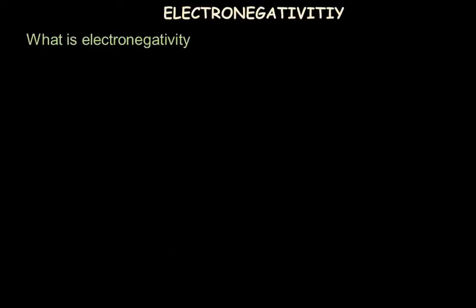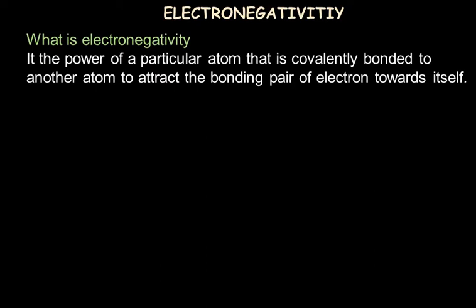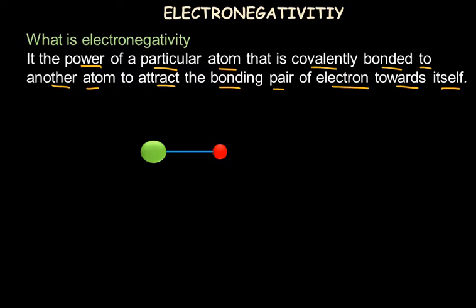Let's first start with what is electronegativity. It is the power of a particular atom that is covalently bonded to another atom to attract the bonding pair of electrons towards itself. For example, in hydrochloric acid, a single electron pair is being shared to form a covalent bond. If one atom is electronegative, it has a tendency to attract the bonding pair of electrons towards itself, and hence the bond ultimately turns out to be polar.